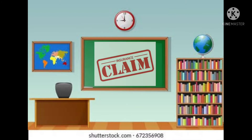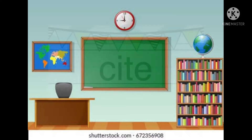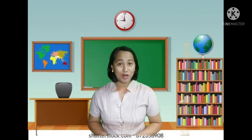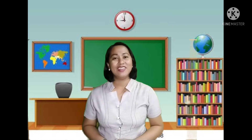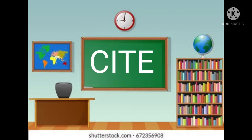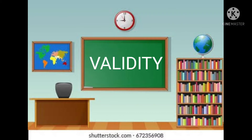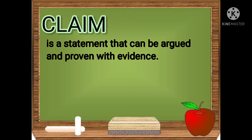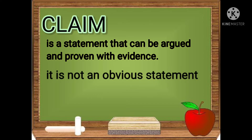The first word is 'claim,' the second word is 'cite,' the third word is 'evidence,' and the fourth word is 'validity.' Did you get them all correctly? A claim is a statement that can be argued and proven with evidence. It is a statement that a person asserts as true, and therefore it needs valid evidence. It is not an obvious statement — for example, saying 'humans need oxygen to breathe' is obvious and everyone knows that.